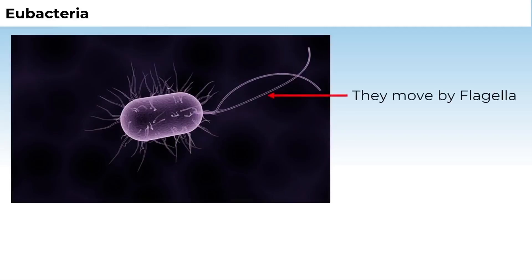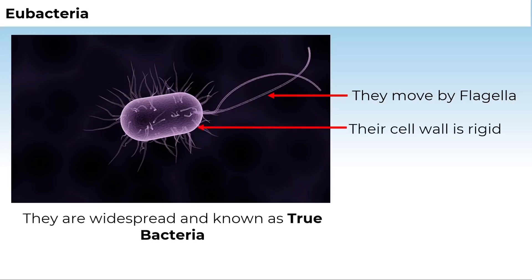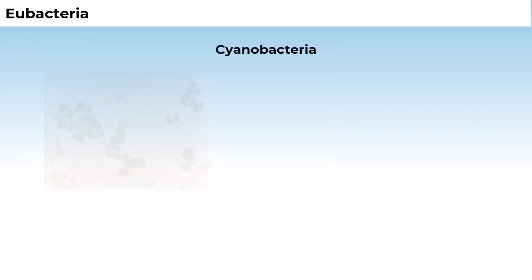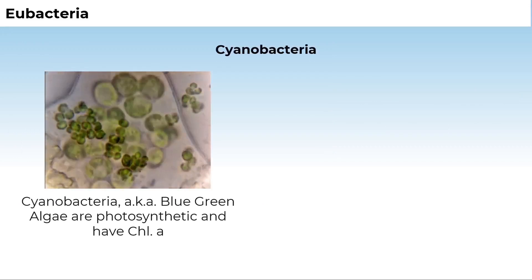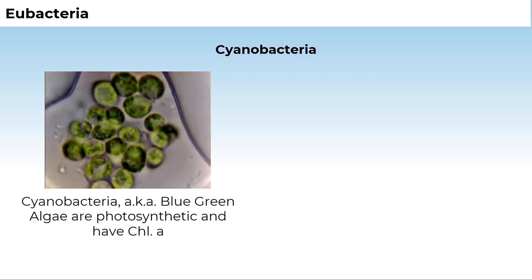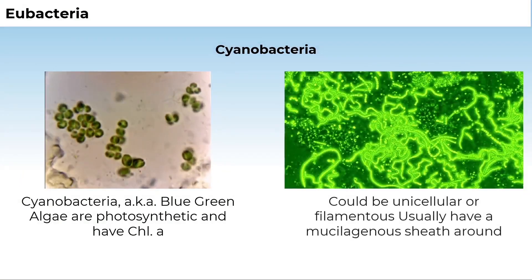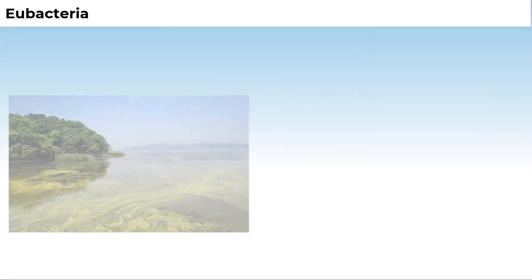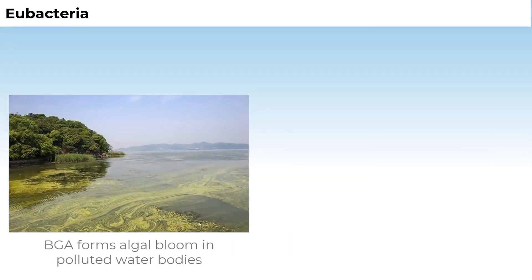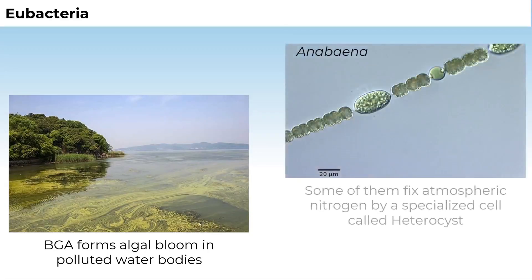Eubacteria move by flagellum. They are characterized by the presence of a rigid cell wall, and are widespread, known as true bacteria. The cyanobacteria, also referred to as blue-green algae, are photosynthetic autotrophs and have chlorophyll A, similar to green plants. Cyanobacteria are unicellular or filamentous, generally surrounded by a mucilaginous sheath, and often form blooms in polluted water bodies.